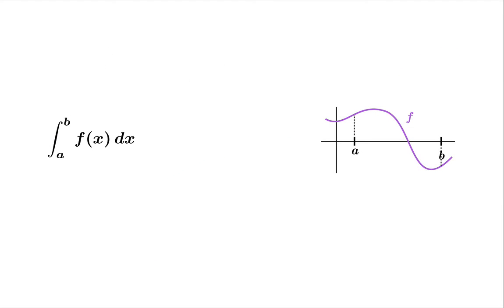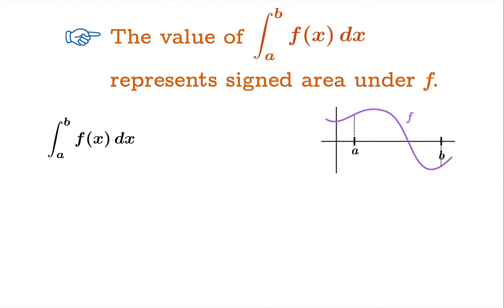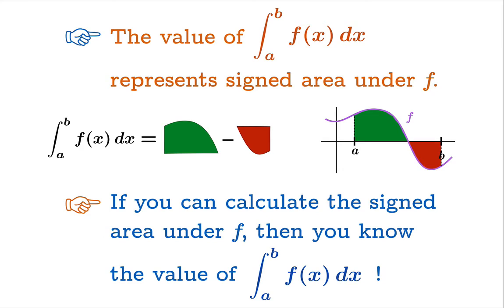So here we have a function f on the interval from a to b. And we're thinking about the definite integral. The value of the definite integral represents signed area under the graph. But there's another way to look at this. If you can calculate the signed area under the graph of f, then you know the value of the definite integral. So sometimes, instead of evaluating integrals to find area, you might be able to evaluate areas to find integrals.